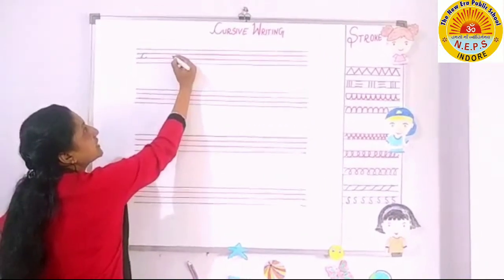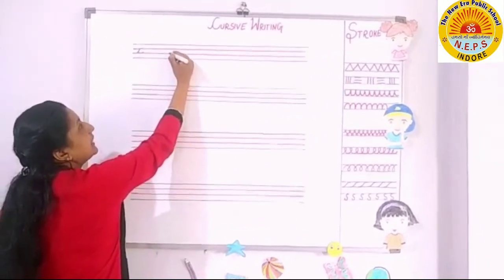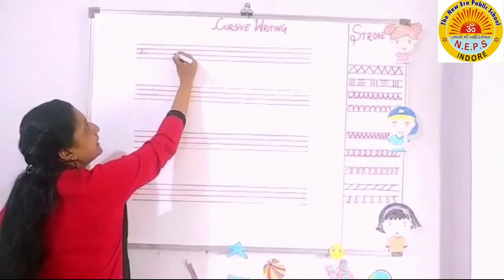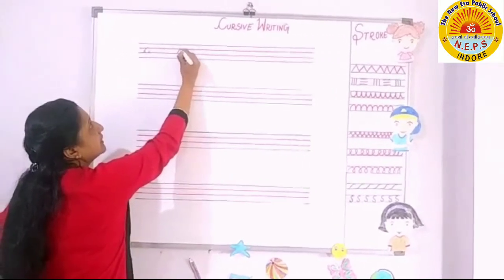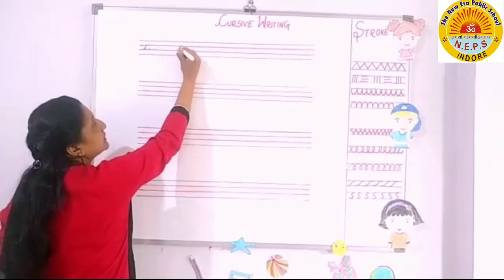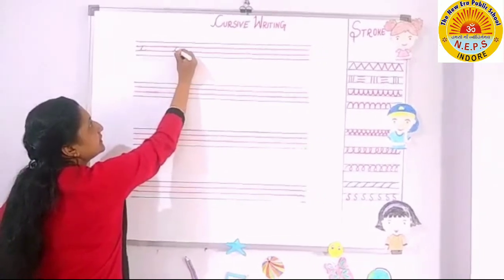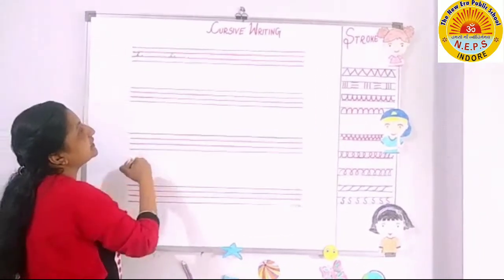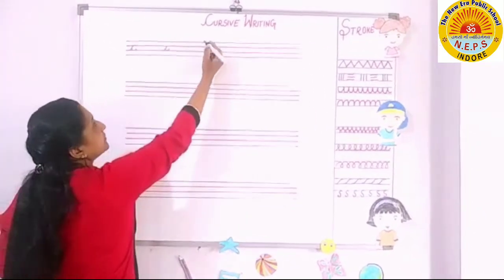Again, we start from the third line — lower midi line to upper midi line. Make a curve. C, C curve, cat.